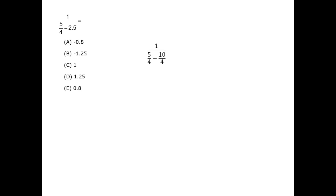Therefore, we can write the original fraction in this way. 5 minus 10 is minus 5, so the fraction is 1 over minus 5 fourths.